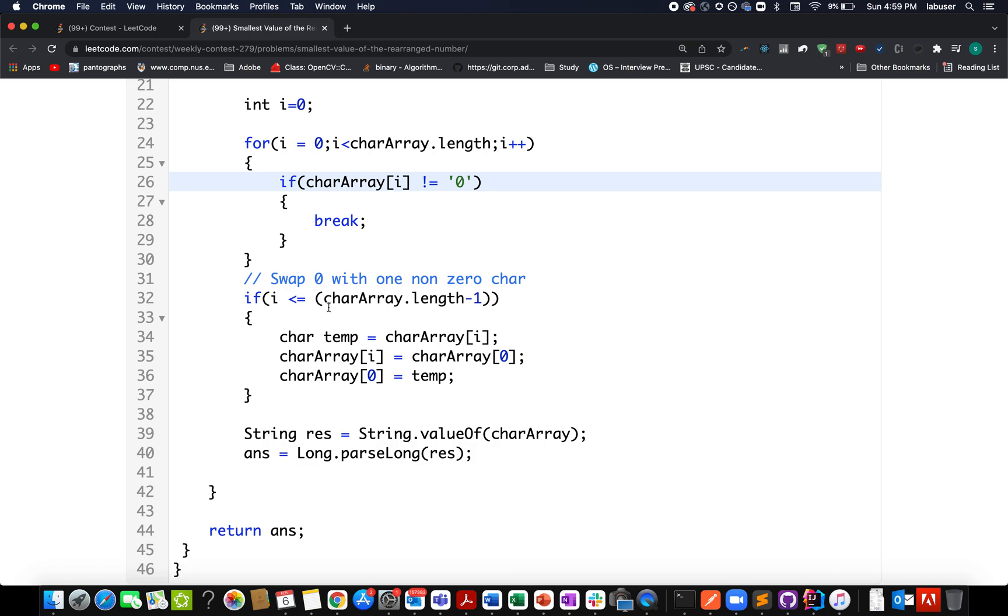Then if zeros do exist, what do I do? I simply swap the character of zero with a non-zero character. And once I am done with this, I simply cast it back into a string format whatever character it is.